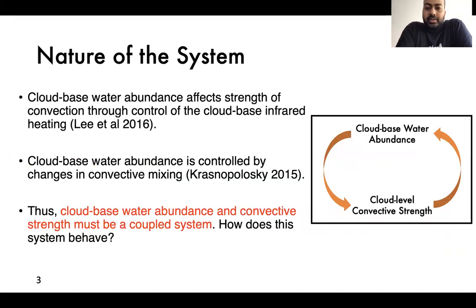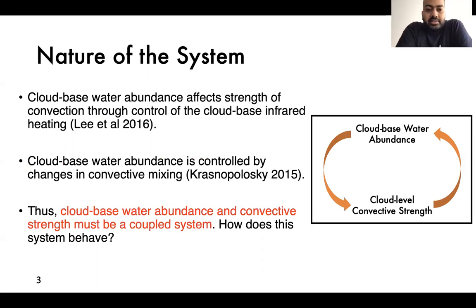In the recent few years, there have been many studies examining both chemical transport and radiative transfer in the atmosphere. The first one that stood out to us is a study by Lee et al. in 2016, who looked at the radiative effects of trace gases in the deep atmosphere of Venus on the atmospheric temperature structure. One of the things they found is that water is a very important control on how much heating there is at the cloud base.